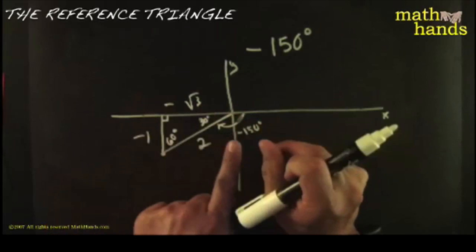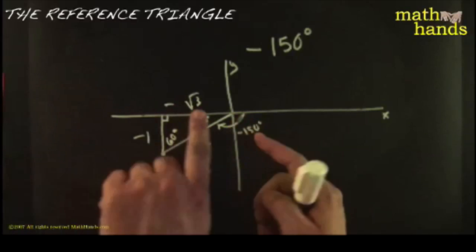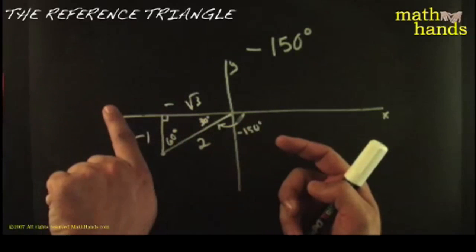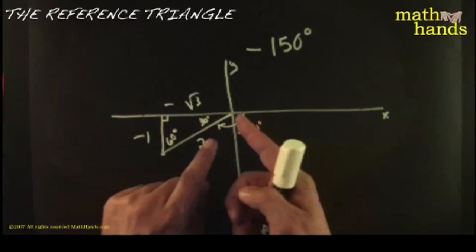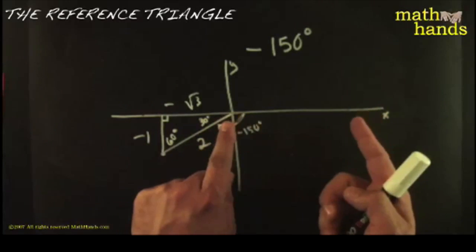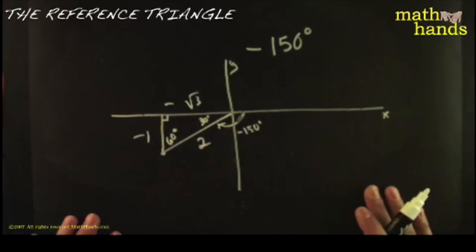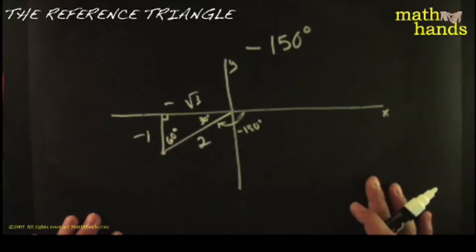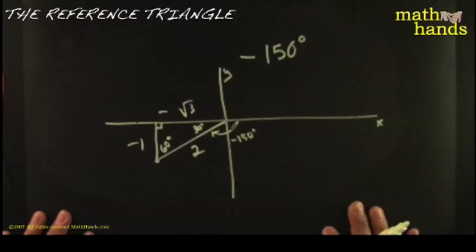Left is always negative, down is always negative. If you go to the right, that's positive; if you go up, that's positive. The only things that are positive or negative are the legs — left is negative, down is negative, right is positive, up is positive. The hypotenuse is always positive by definition. And there it is — that's the reference triangle for negative 150 degrees.